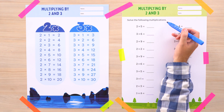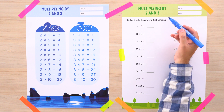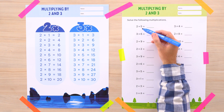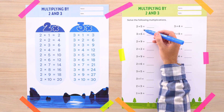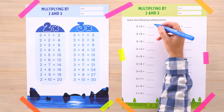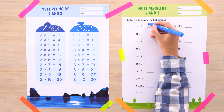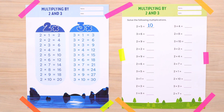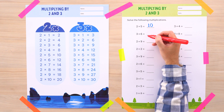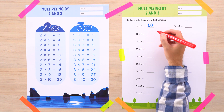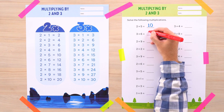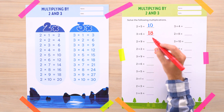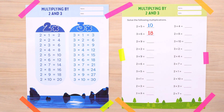We need to solve the following multiplications. In the first problem we have 2 times 5, and 2 times 5 is 10. 10 is the correct answer. Let's continue with the second problem. Here we have 3 times 6, and 3 times 6 equals 18. That is correct — 3 times 6 gives us 18.